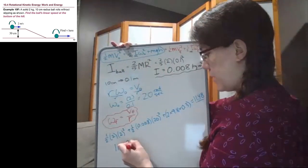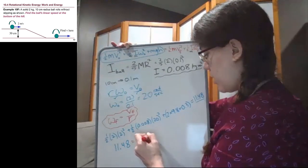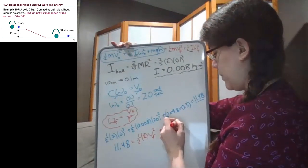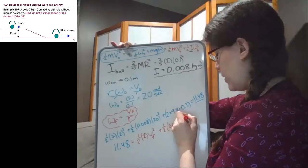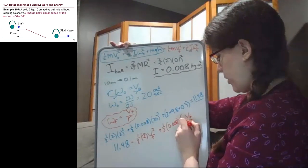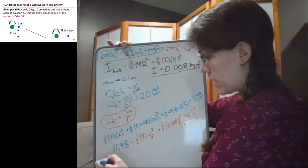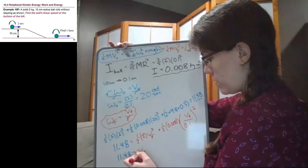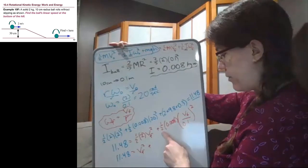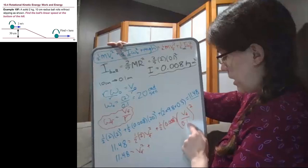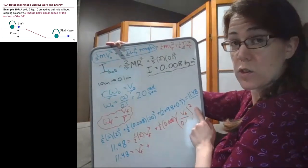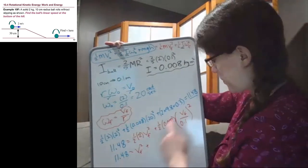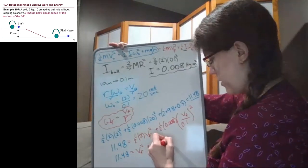Now we're going to get to the right side, which equals one half mass 2 times our unknown v final squared, plus one half i 0.008, and omega final we need to put in parentheses, is our v final that we don't know times the radius 0.1, and that gets squared. Let's simplify this. One half times 2 is 1, so this becomes v final squared, plus, and I'm going to multiply one half times 0.008 and divide by 0.1 squared.